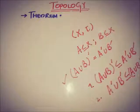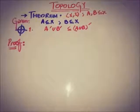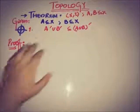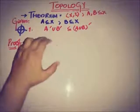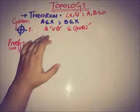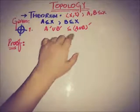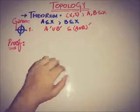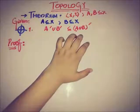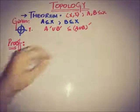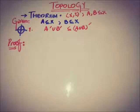Heading toward the proof of the first part, our target is to show that A'∪B' is a subset of (A∪B)', the accumulation set of the union.